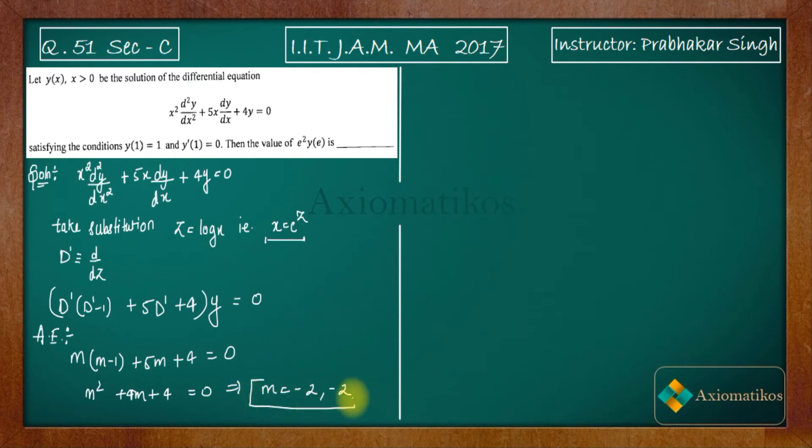According to this, we are getting roots of the auxiliary equation which are identical and real. So what will be the solution? The solution will be y = (c₁ + c₂z)e^(mz).